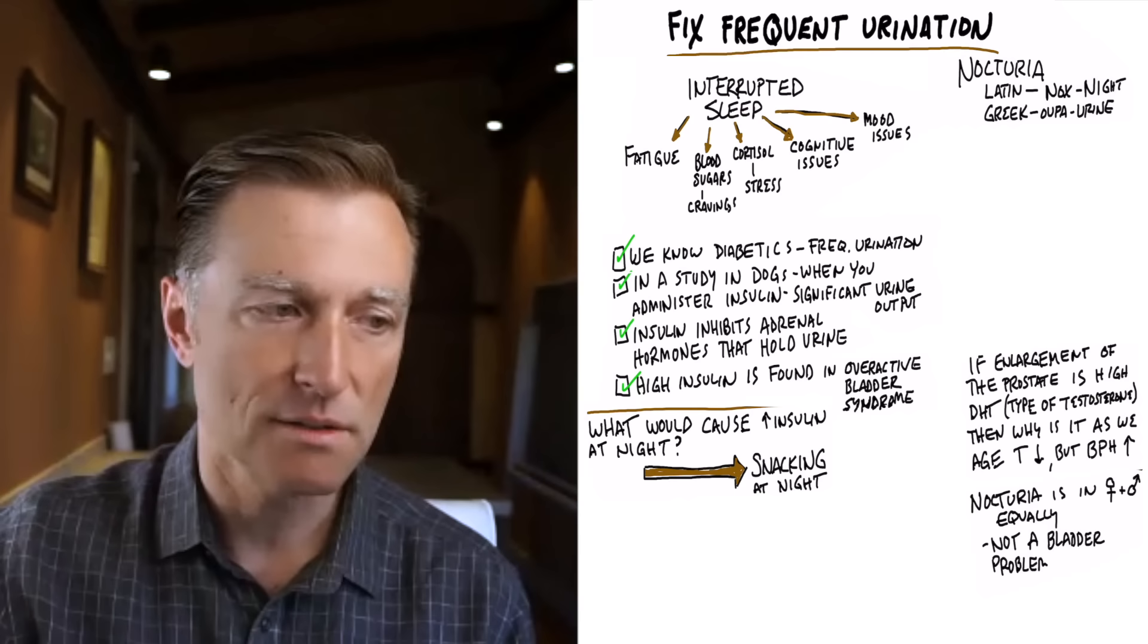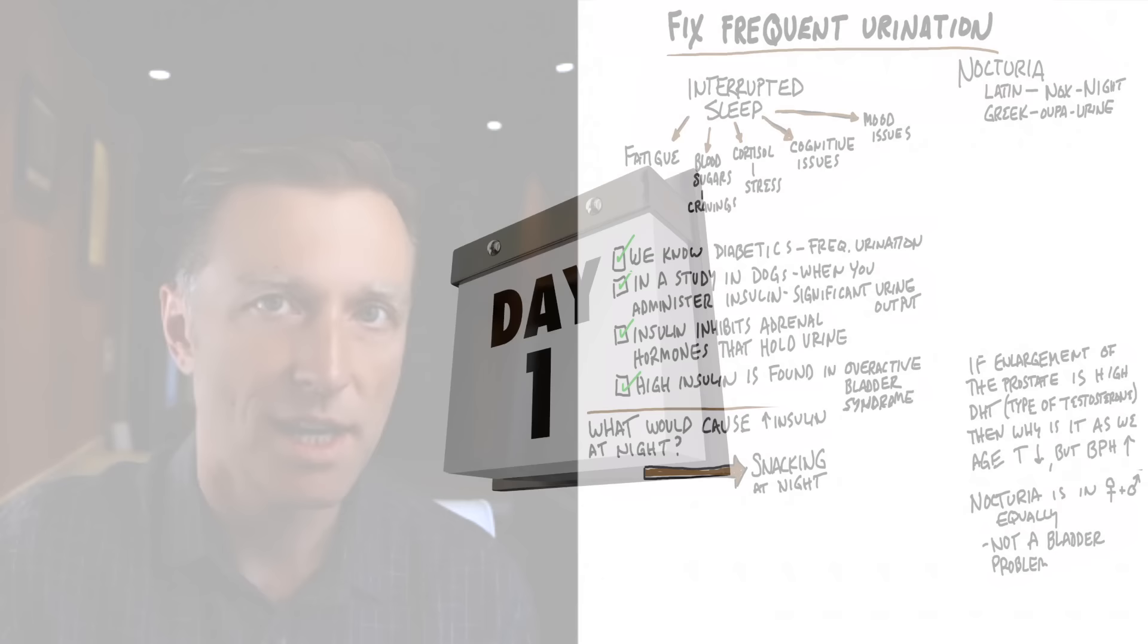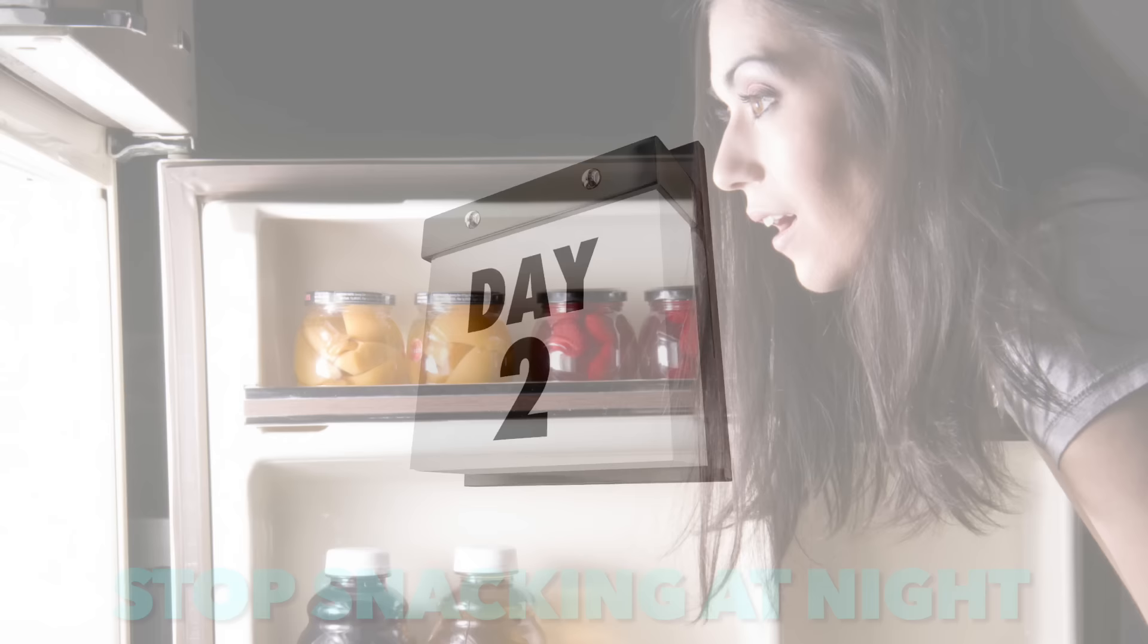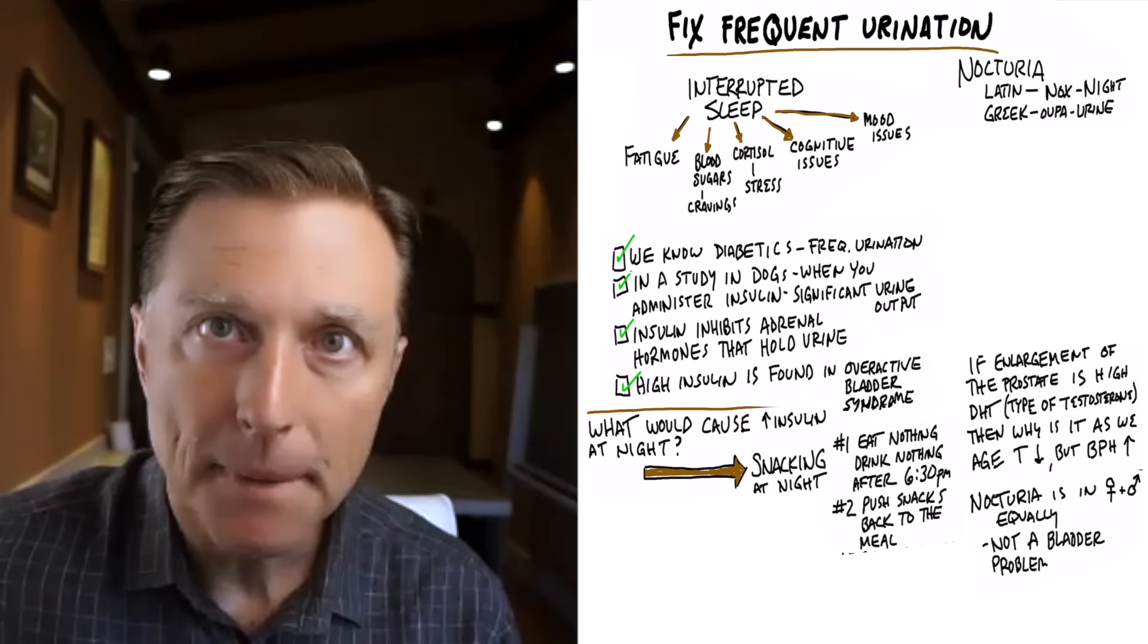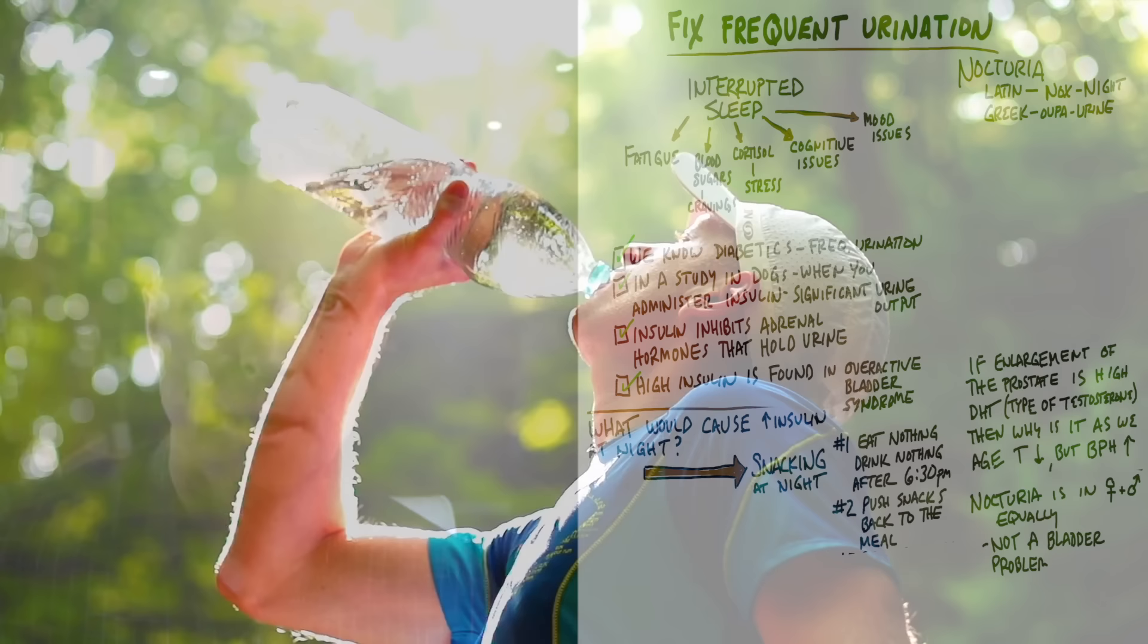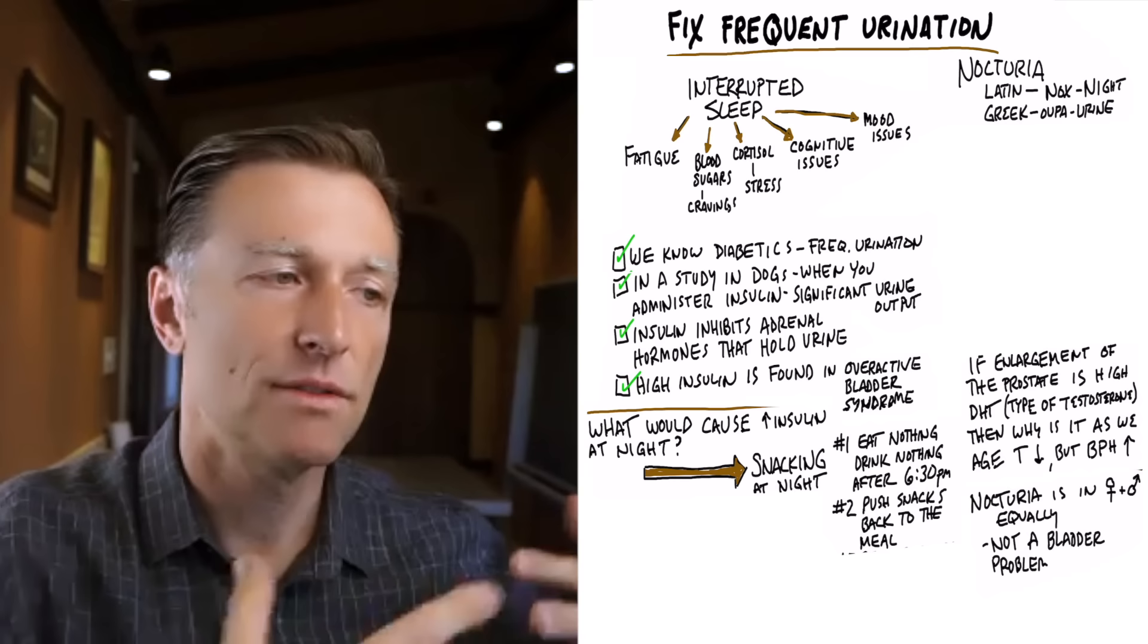So this is what you need to do. It's very simple. It's not complicated. It's going to produce some quick changes. It might take a couple of days to work, but it will work. Number one, stop snacking at night. Take the snack that you would normally eat at night and push it to your dinner. And don't eat anything after 6:30 PM. And don't drink anything past 6:30 PM. Just make sure you drink enough through the day, but don't drink at night because the combination of high insulin and that extra water that you drink before you go to bed will definitely keep you up all night long.